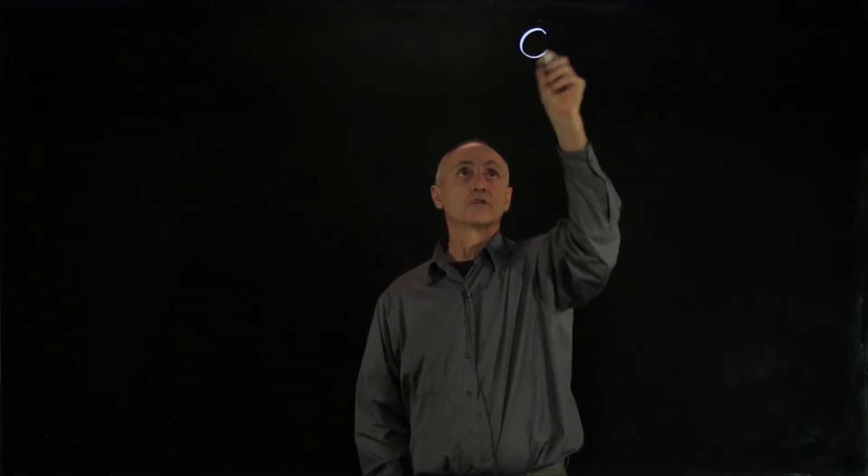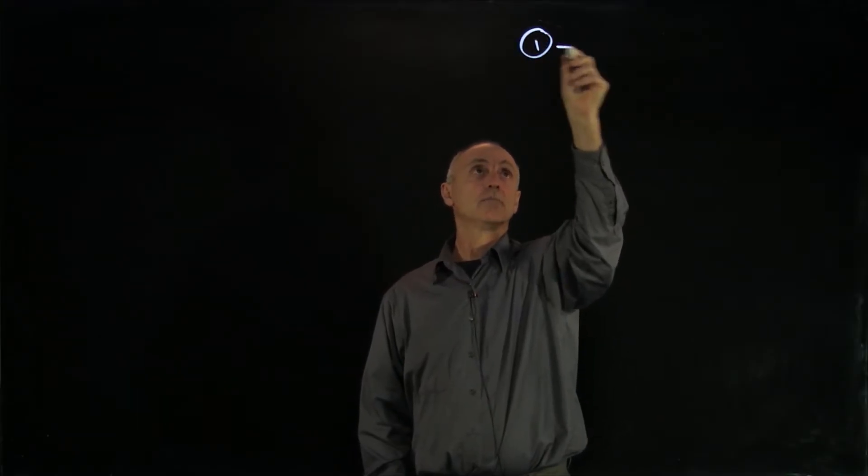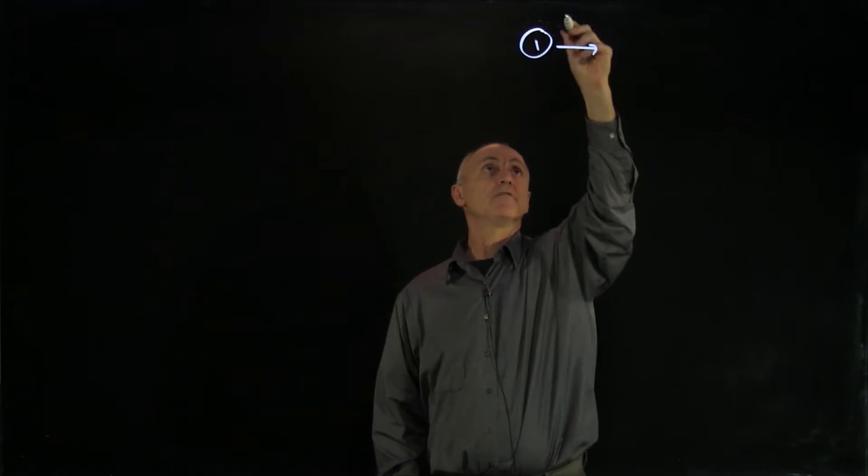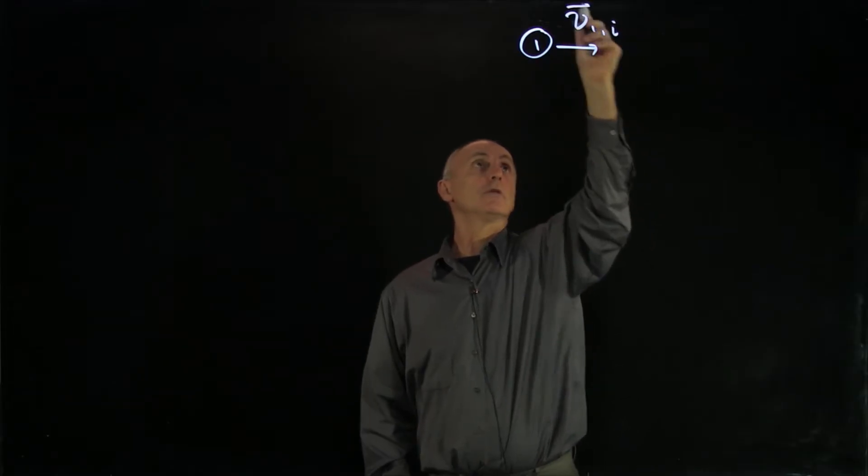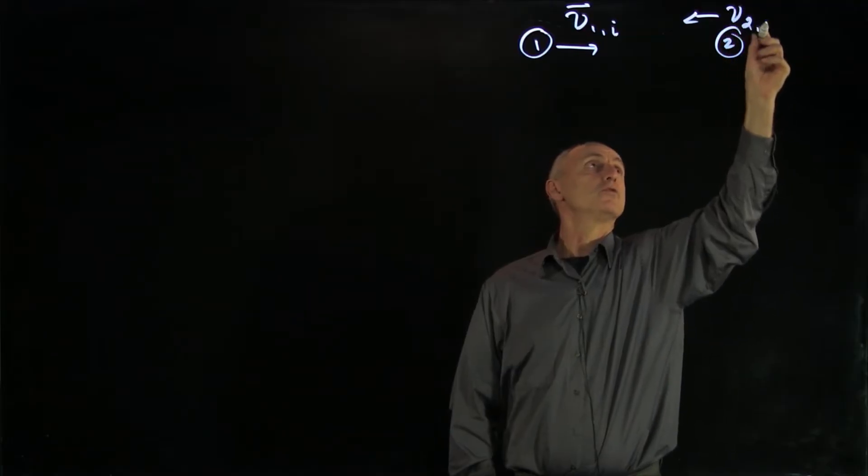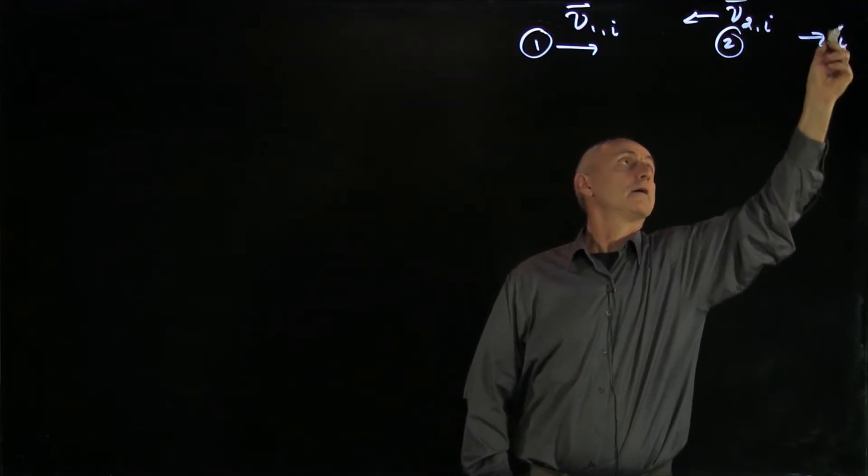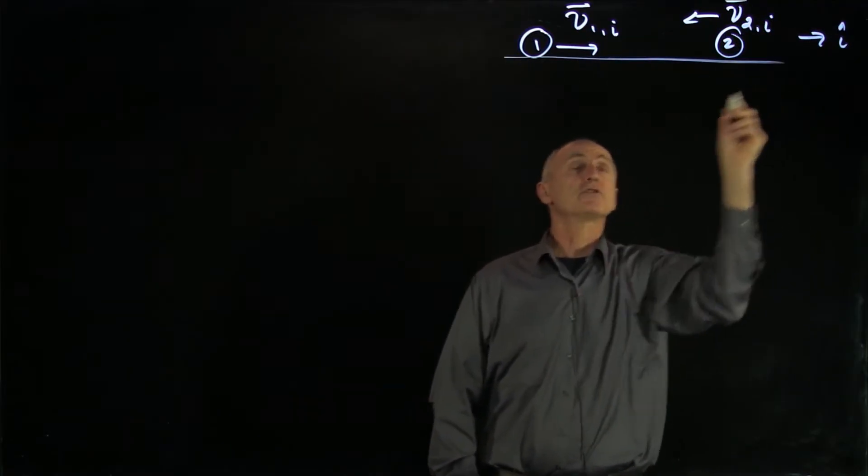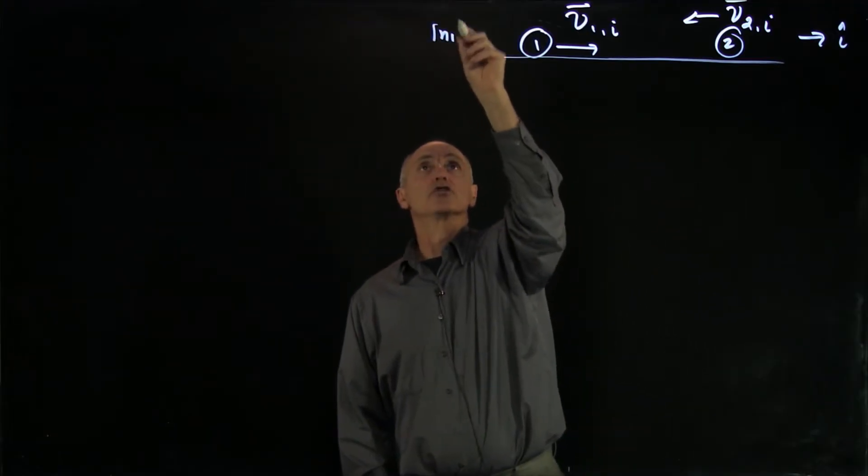So we're going to return to our one-dimensional elastic collision with no external forces. We have object 1 moving with velocity v1 initial, and object 2 maybe moving this way with v2 initial i hat, again on a frictionless surface. And we'll call that our initial state.